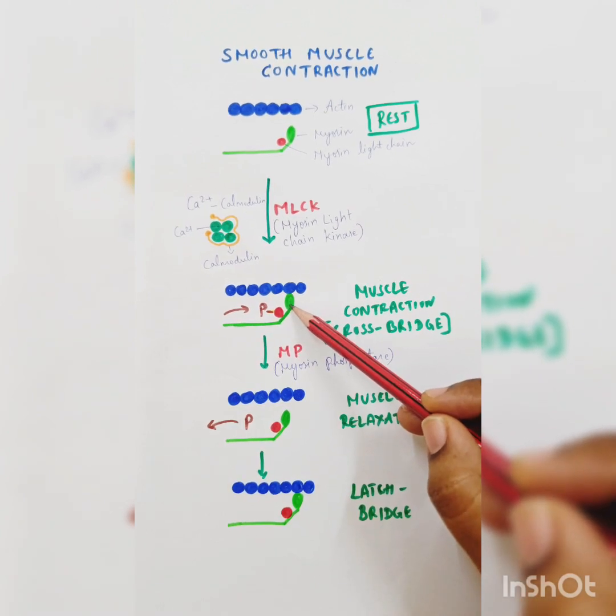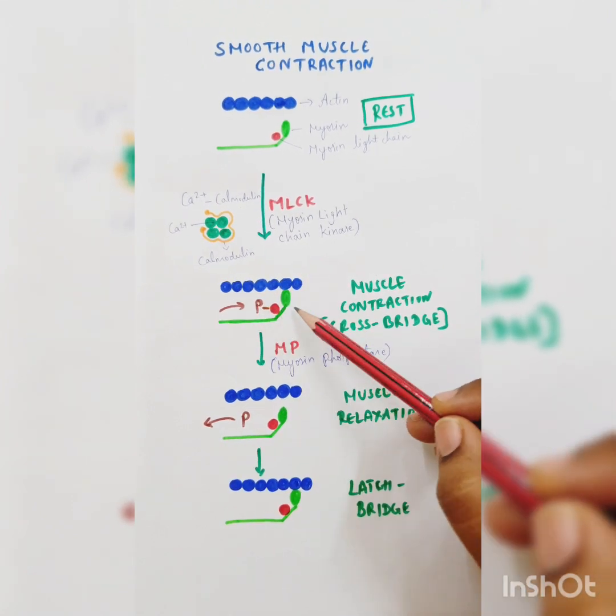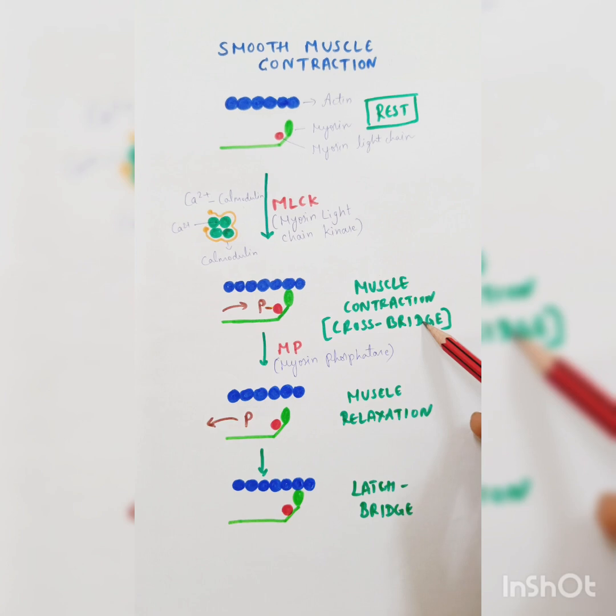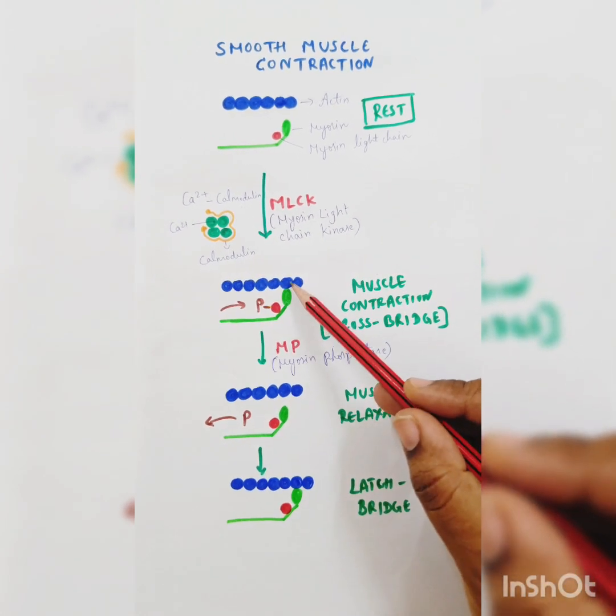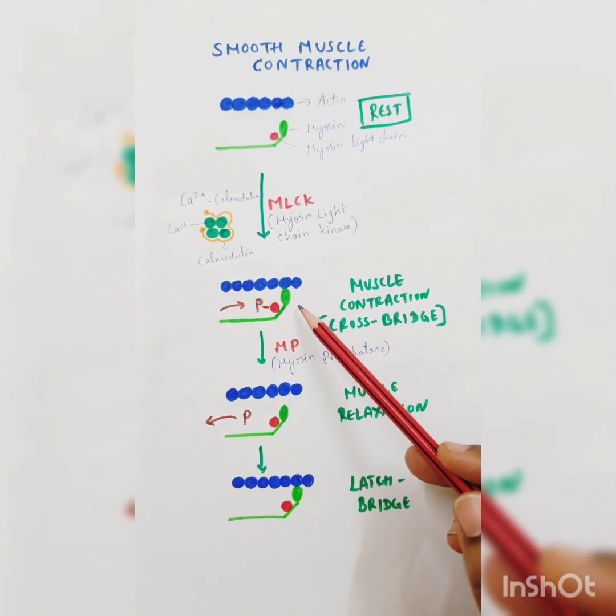The myosin head is energized, so it will attach with the actin molecule. Once this bends and the power stroke happens, the muscle contracts. When a cross-bridge is formed, it means the myosin head is attached with the actin molecule.